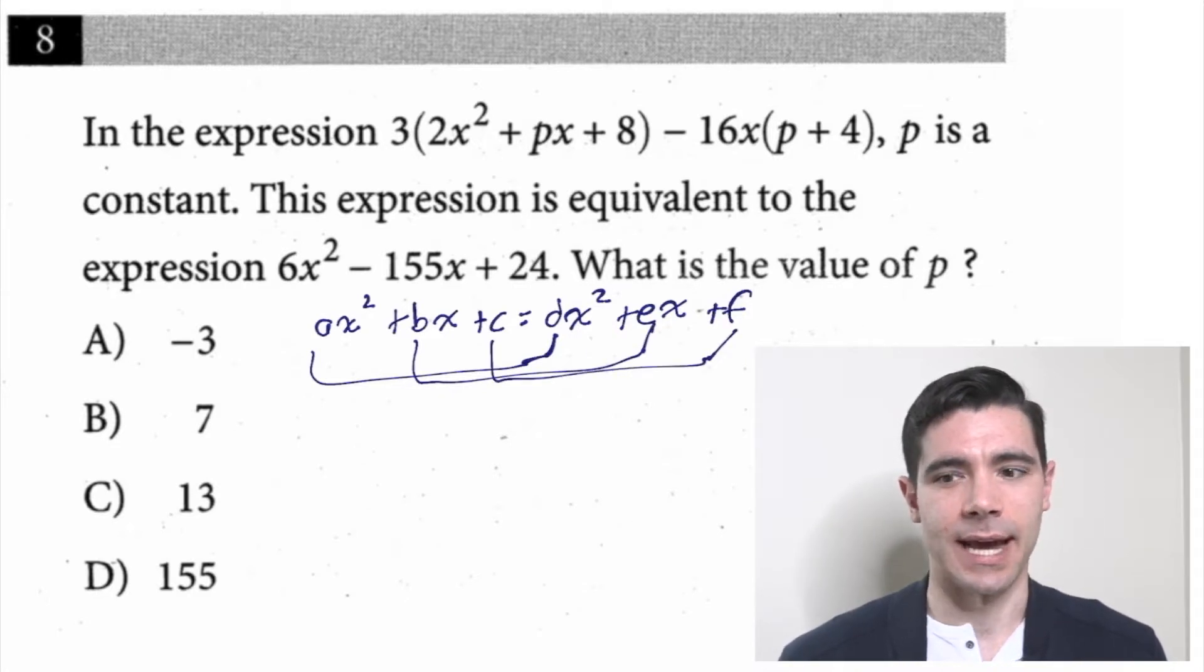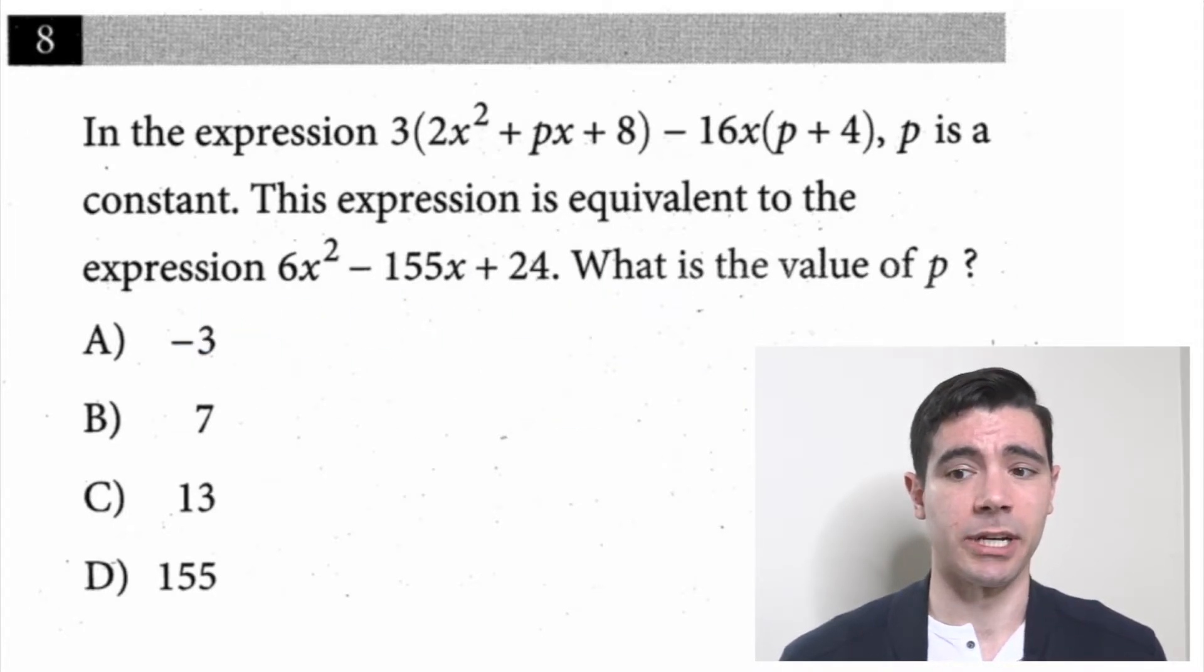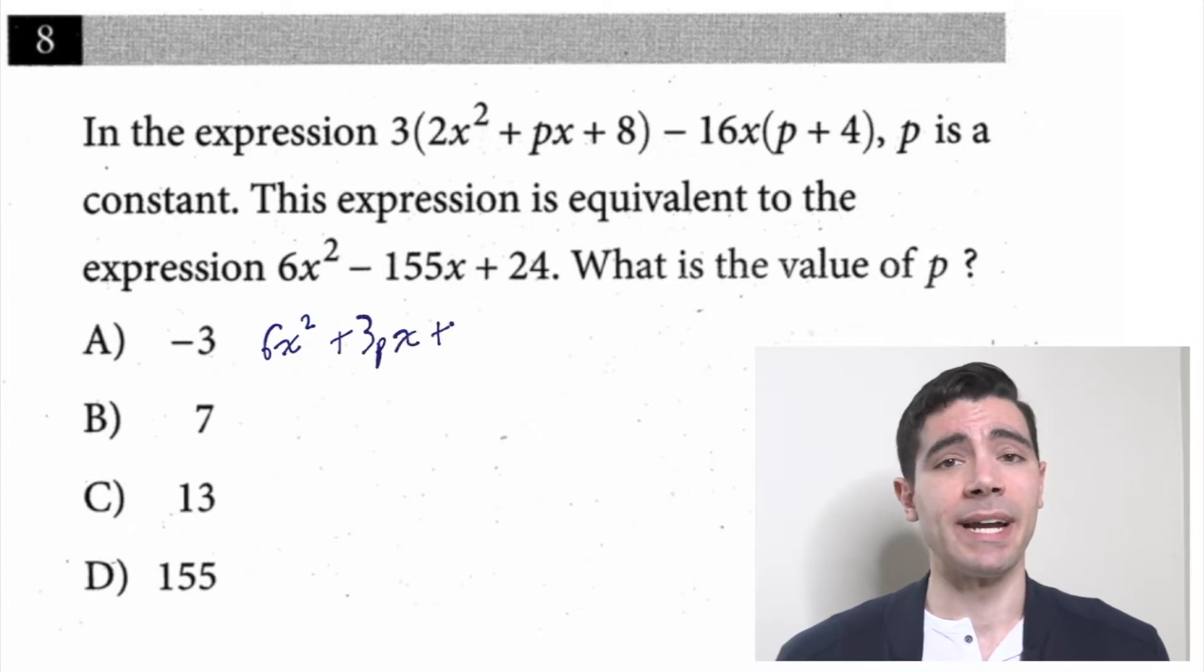So I'm trying to set this up to look like that. Looks like I got to combine some like terms and do some distributing. So let's distribute this 3. We get 6x² + 3px + 24 minus, let's distribute this 16x, so minus 16px - 64.